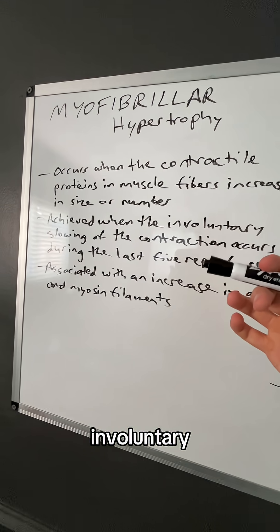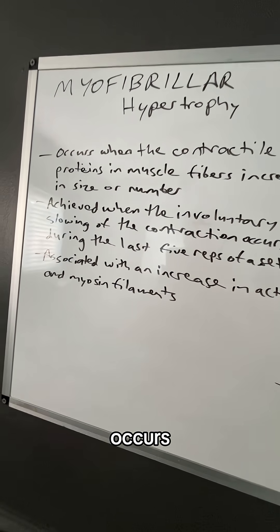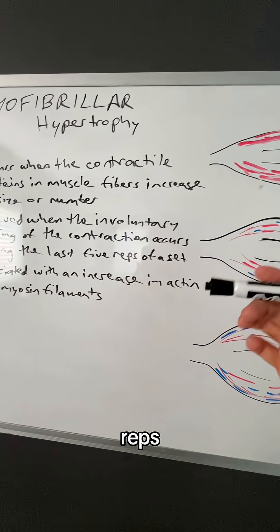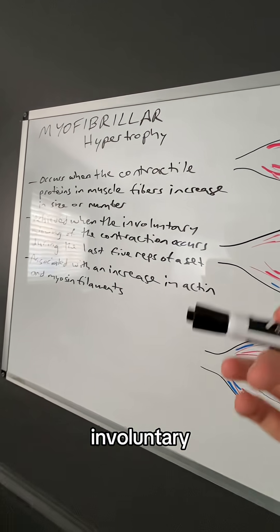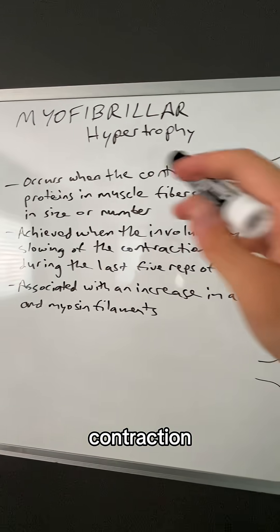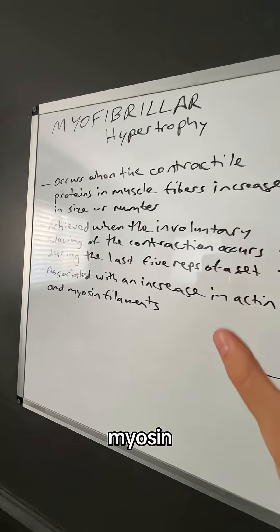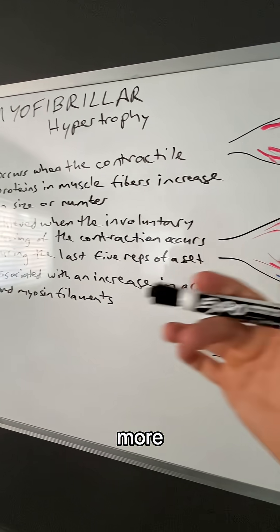This is achieved through the involuntary slowing of the contractile phase, and it occurs during the last five intense reps of a set.